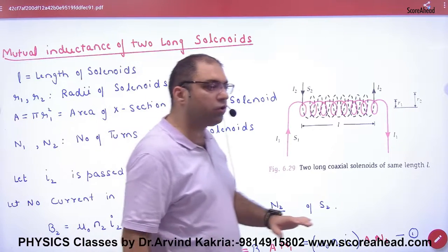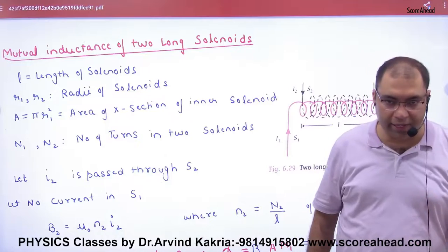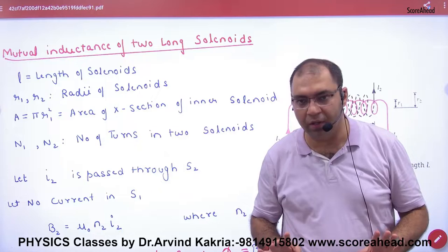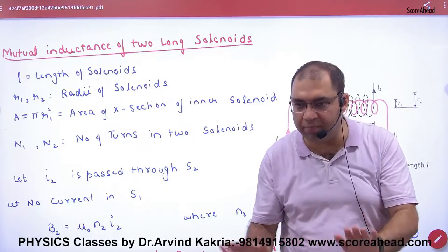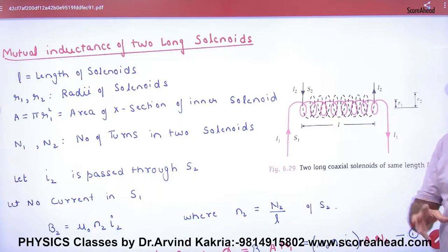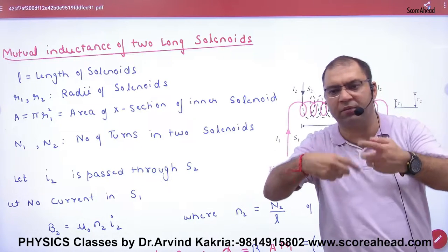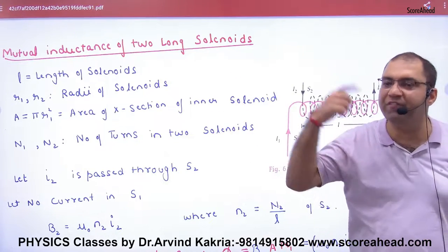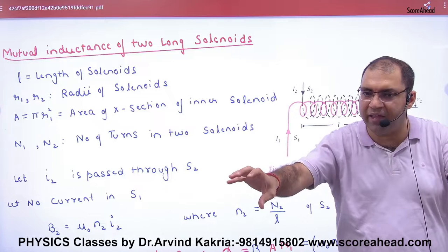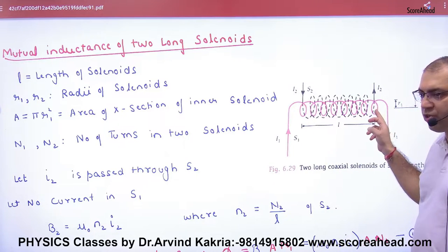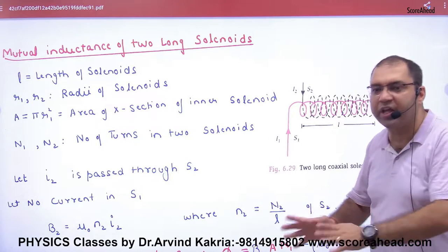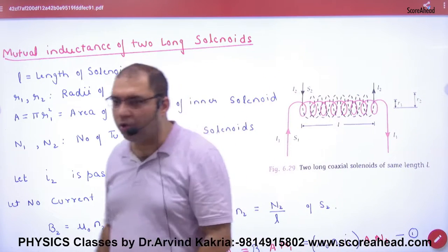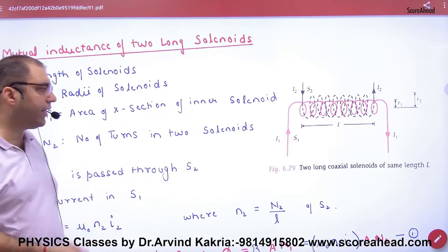Mutual inductance of two long solenoids — mutual inductance or coefficient of mutual inductance, symbol is M. We want to find M with two coils. Rule number one: when you take two inductors or solenoids, keep one axis common. This is a benefit. If you keep them far, the induced EMF will be less; if you align them on the same axis, the effect will be maximum.